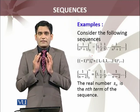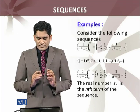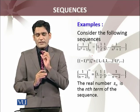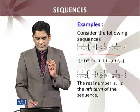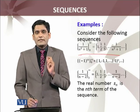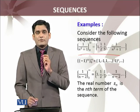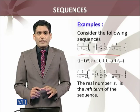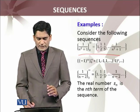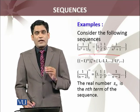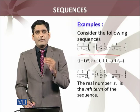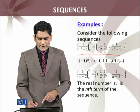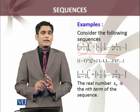Now you are looking at some examples of sequences. Consider the following: in the first example, s_n equals 1 over (n squared plus 1), and n starts from 0 to infinity. So k equals 0 here. When I put n equals 0, I get 1 — that is the first term. Putting n equals 1, 2, 3, and so on, I get the terms 1, 1/2, 1/5, and so on. These are the terms of the sequence.